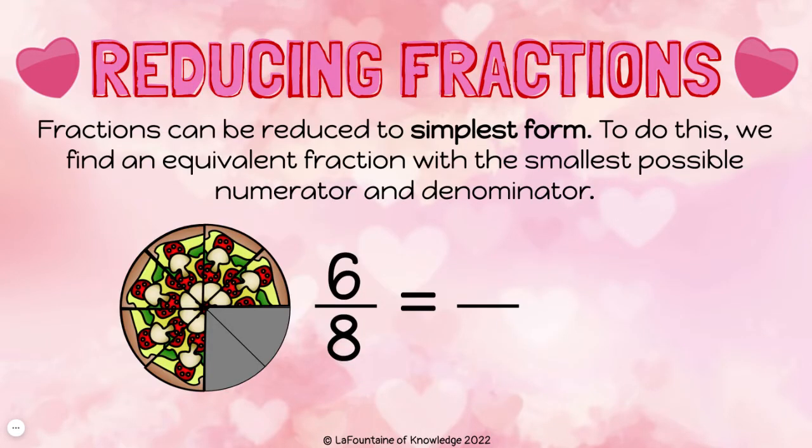Fractions can be reduced to simplest form. To do this we find an equivalent fraction with the smallest possible numerator and denominator. We need to find the greatest common factor — that's the largest number both the numerator and denominator can be divided by evenly. In this case it's two. Six and eight can both be divided by two evenly without a remainder, so it's the greatest common factor.